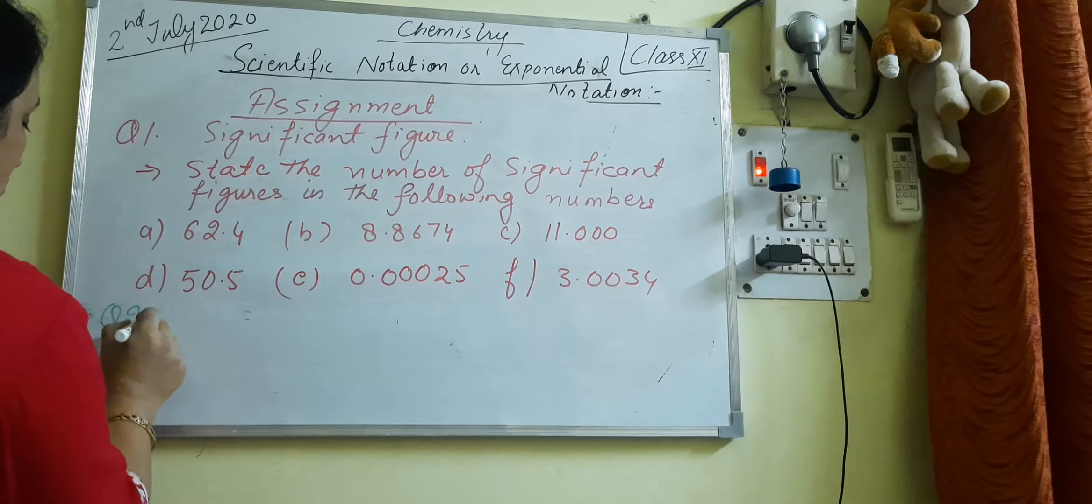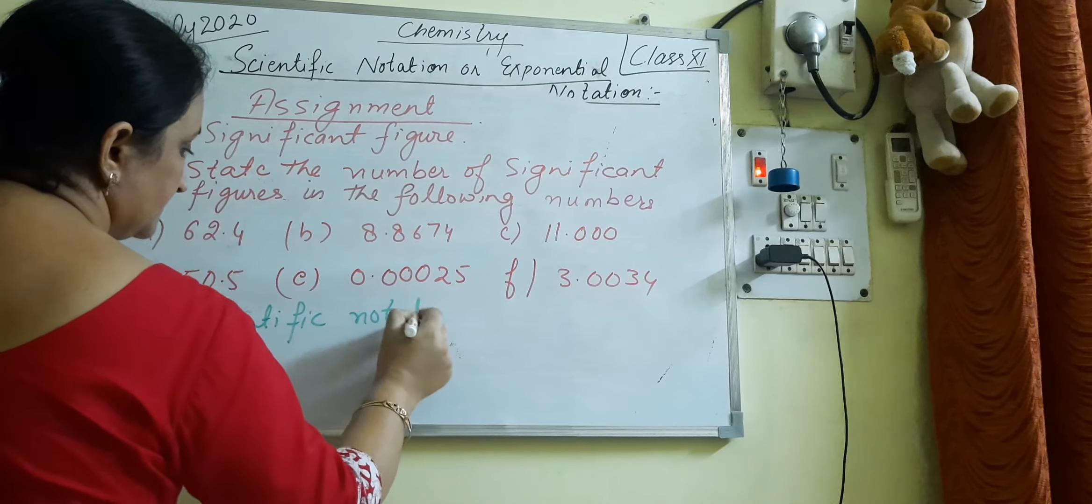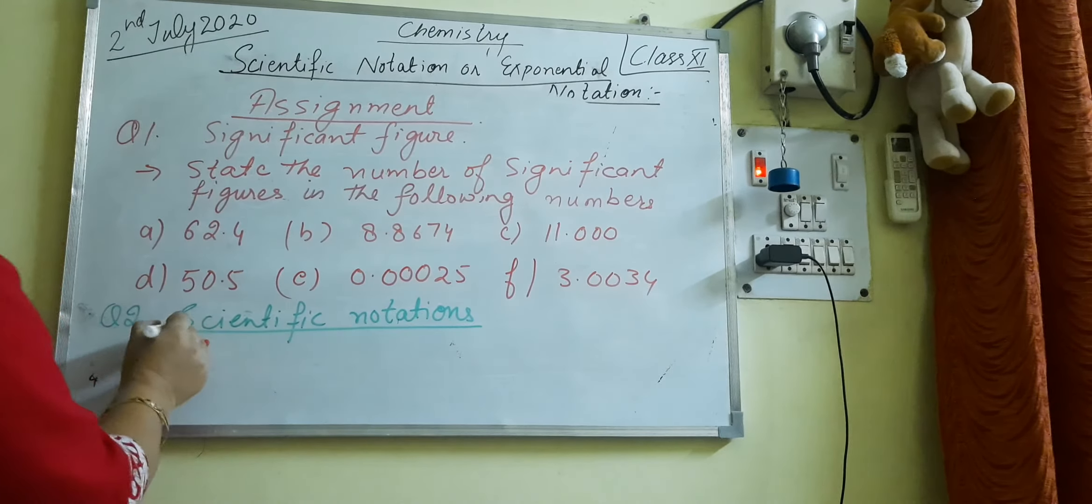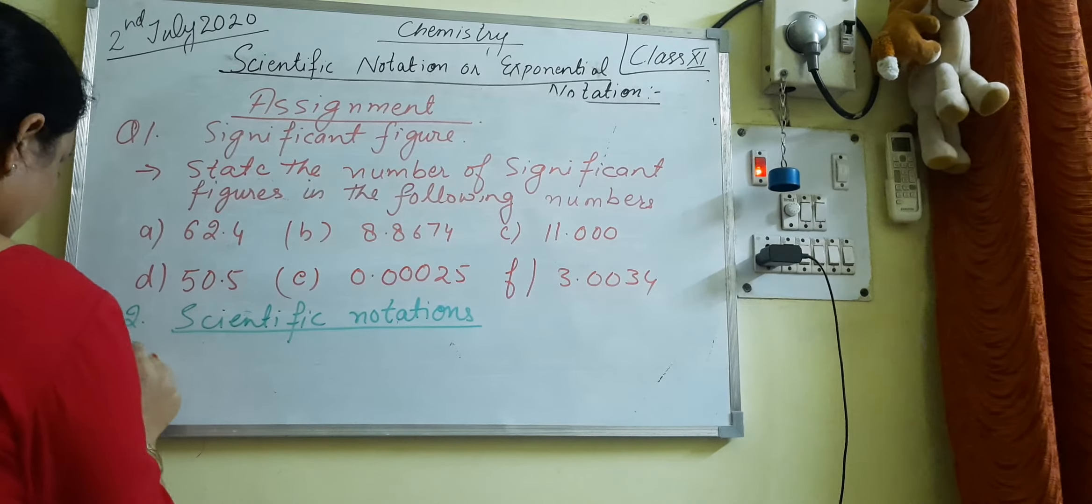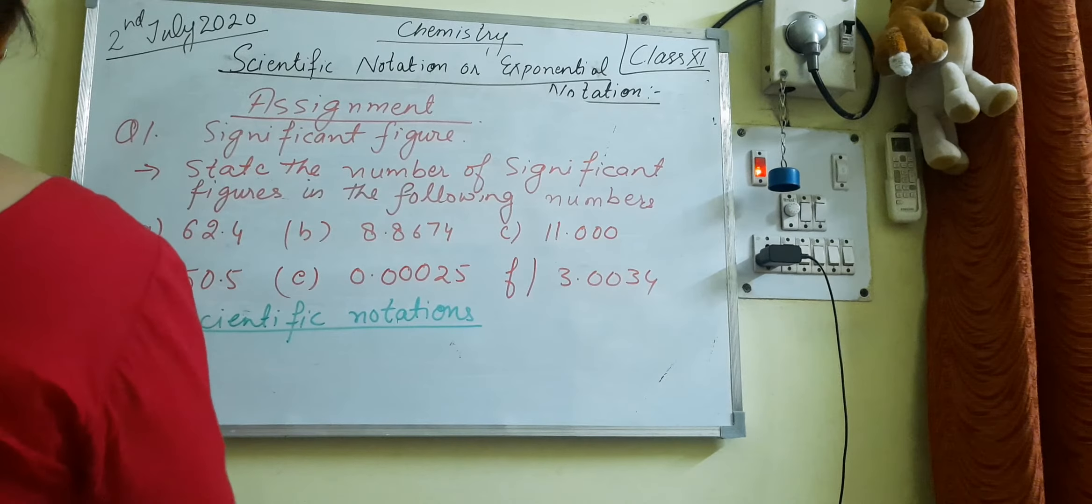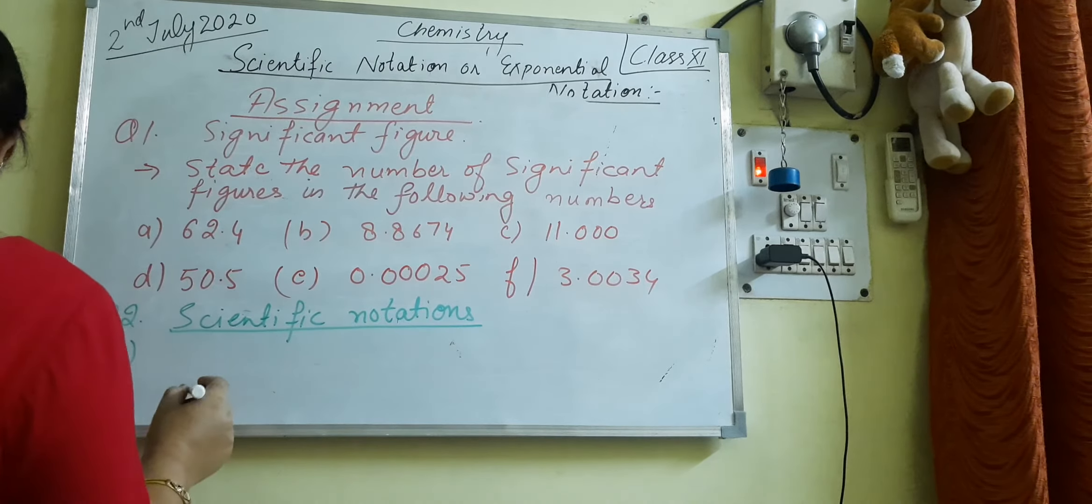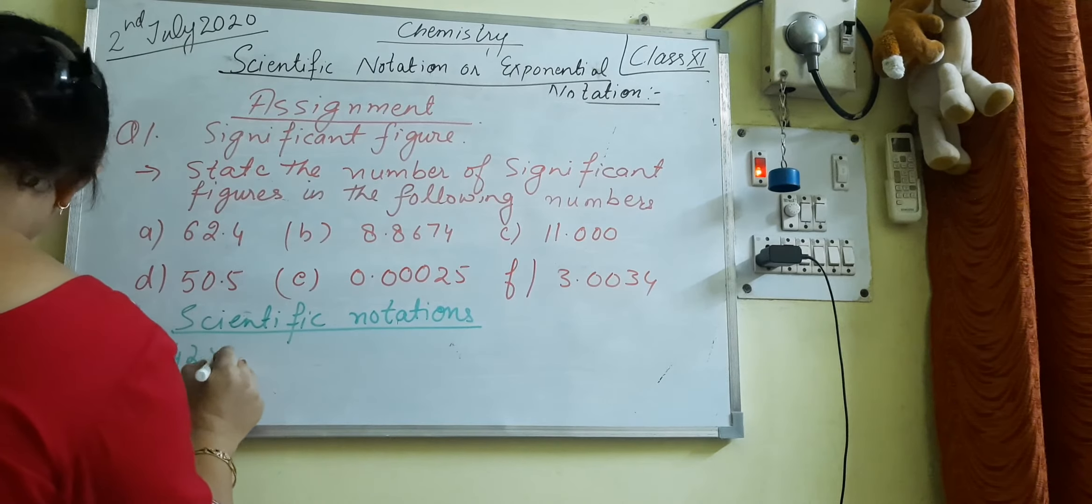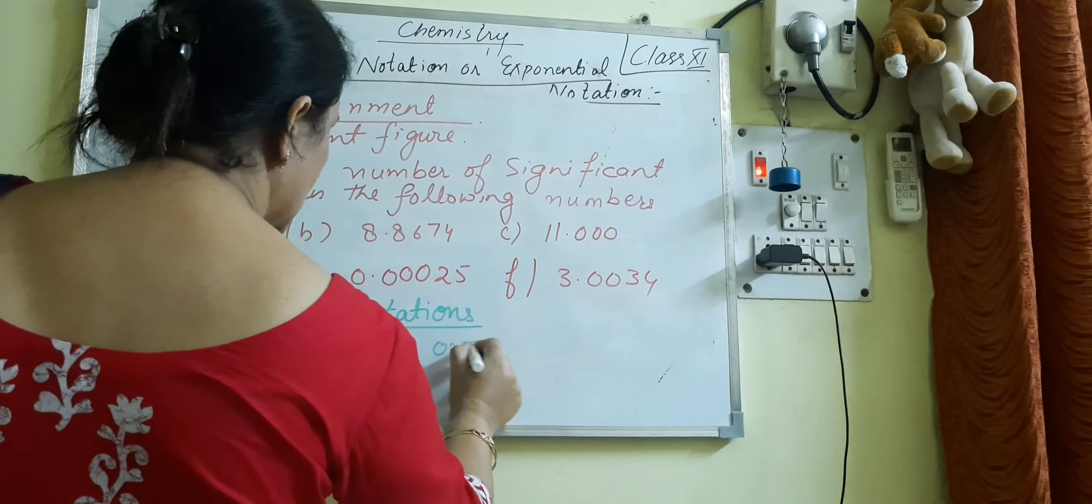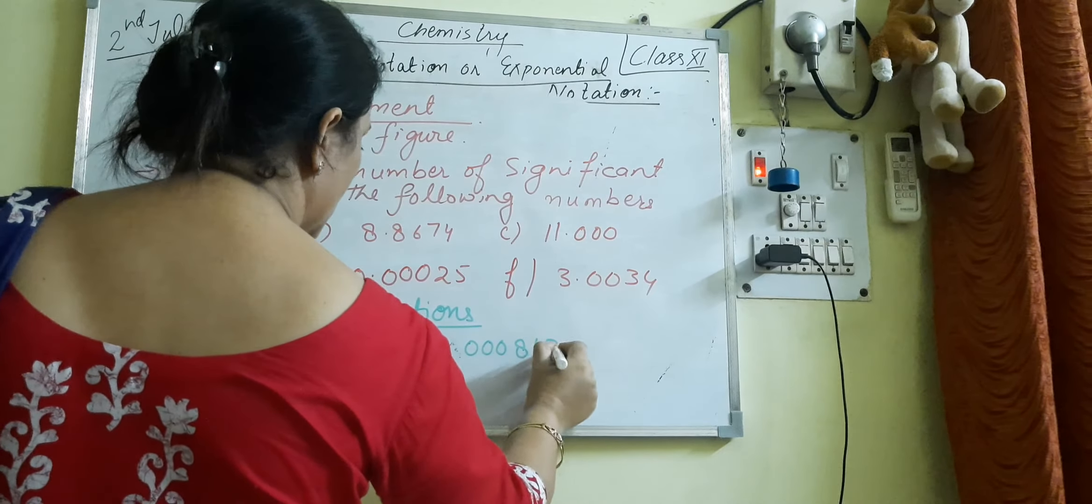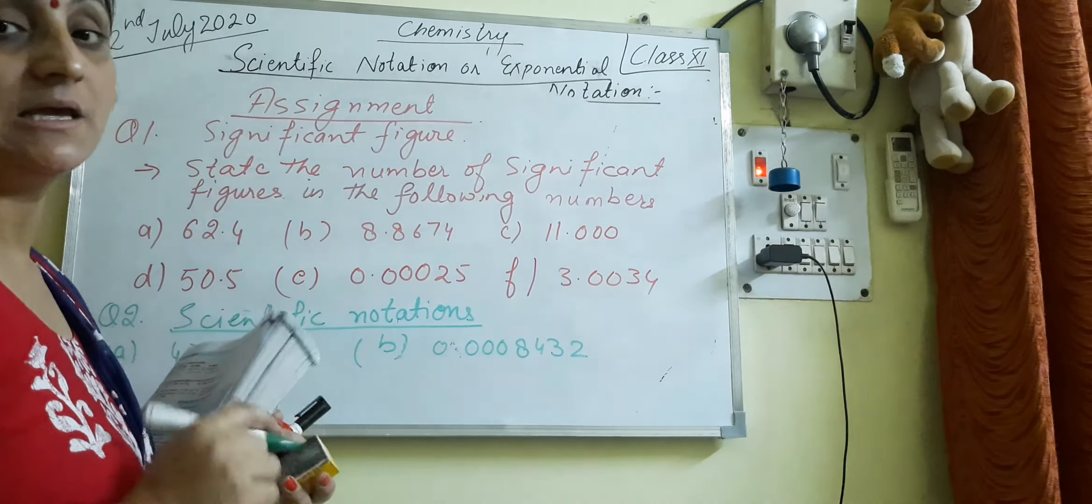And then portion 2 for the scientific notations: express the following in scientific notation: A is 42500, B is 0.000843. You have to write these questions along with their answers in your copy.